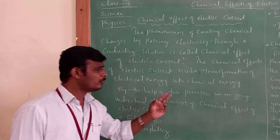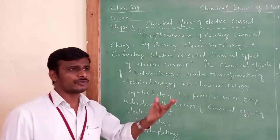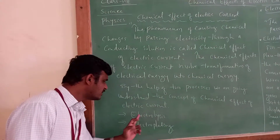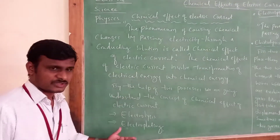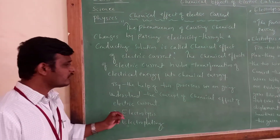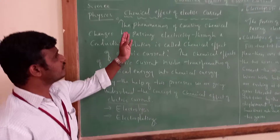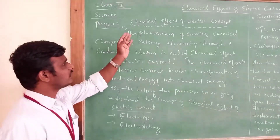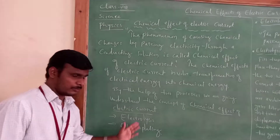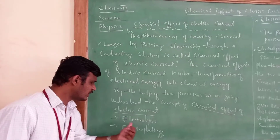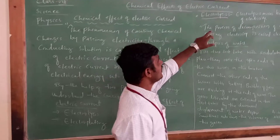We are going to understand the concept of chemical effect of electric current with the help of two processes. The first is electrolysis and the second is electroplating. With the help of these two processes we are going to understand the concept of chemical effect of electric current.